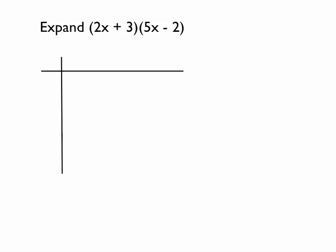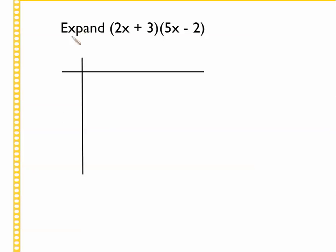So let's have a look at a couple of examples now. Expand, that means multiply out everything in these two brackets. We do ourselves our multiplication grid. Everything in the first bracket we put on the top line. Notice how I carry the positive with the 3. And then 5x with the minus 2 goes down that side.